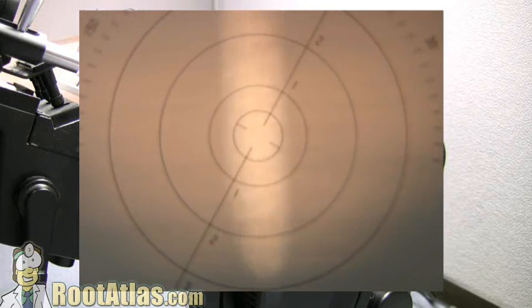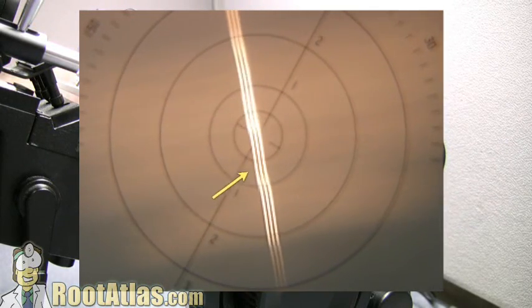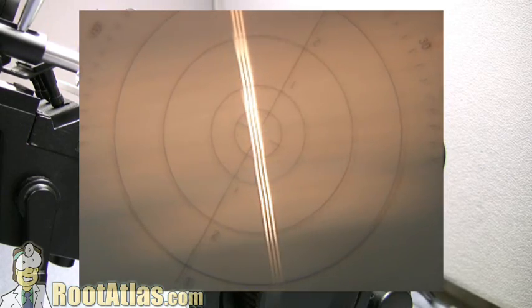So if we zoom in, we can see there are three lines. You want to get them lined up and in focus, and then you can mark down what this is.